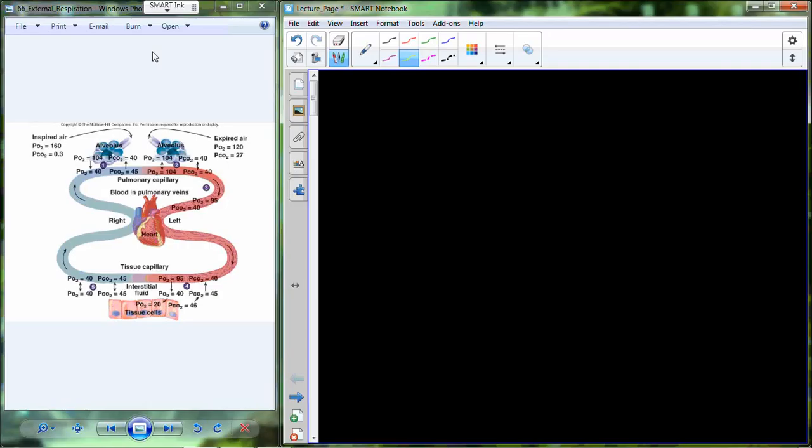So it's CO2 transport in the bloodstream. CO2, where is CO2 coming from? It's produced in the tissue, produced in the cells.